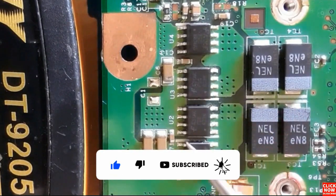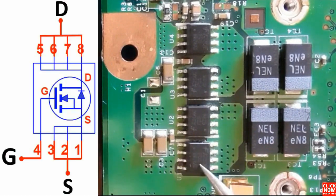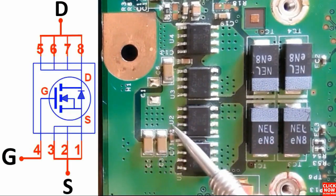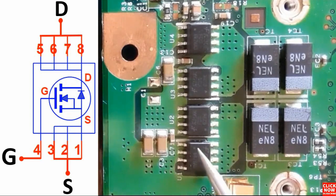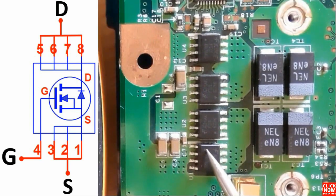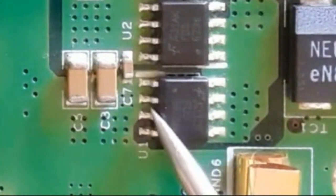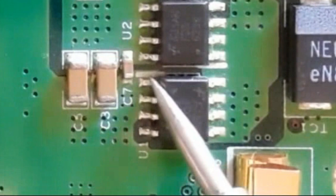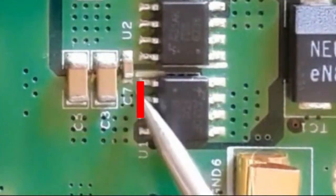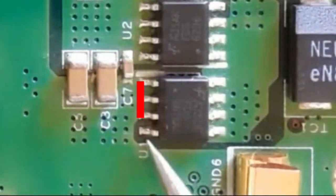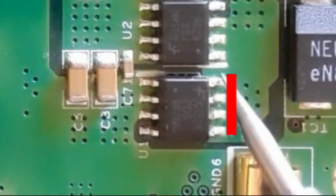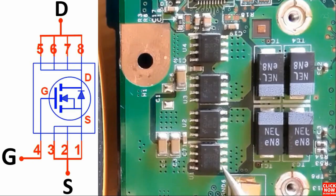Now let's see some real MOSFETs in real motherboards. As you can see here, we have four MOSFETs that we're going to check step by step. We have here U2 — 'U' stands for a MOSFET or an IC in a motherboard. The white dot here means this is pin number one, then two, three, and so on. These three pins are source, here we have gate, and over here we have four drain pins.